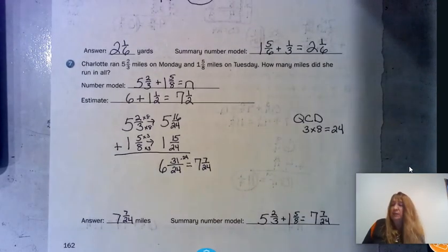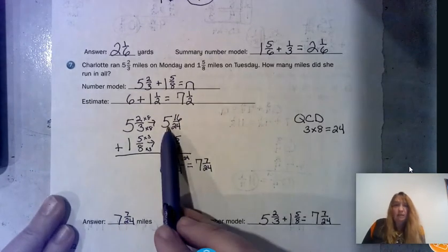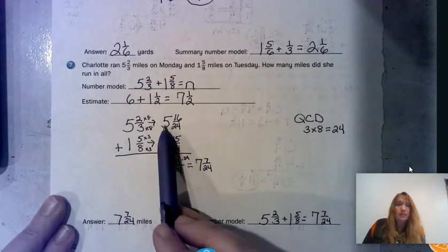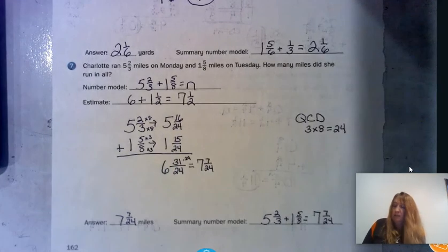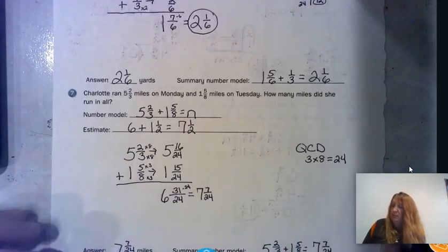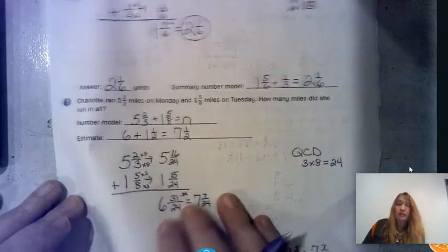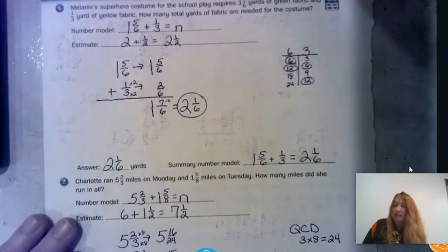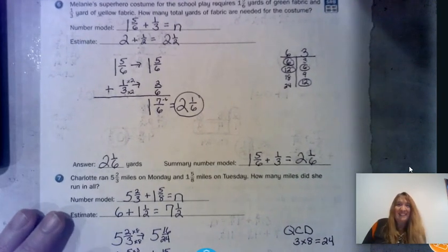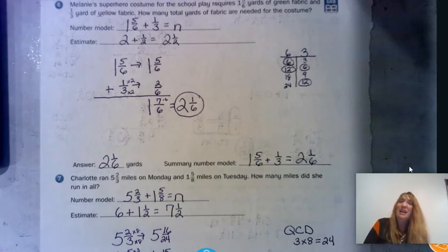When adding mixed numbers, first make sure you have a common denominator. If you need to rename, don't touch the whole number — just bring it over. It's the fraction part you're changing. We practiced QCD, t-chart, and ladder method. Keep practicing your common denominator methods — you're doing a fabulous job. Maybe next time we'll work with subtraction!